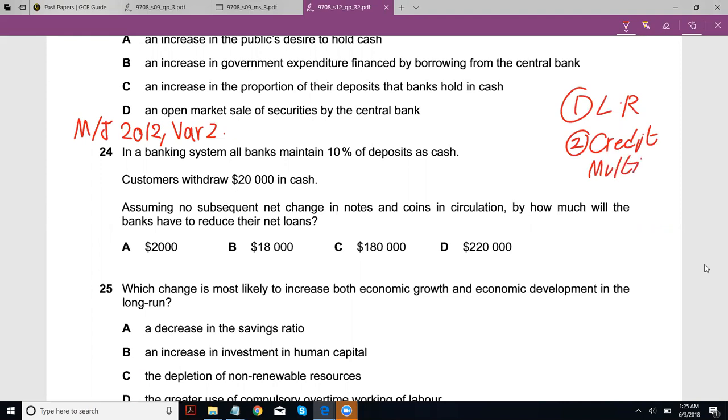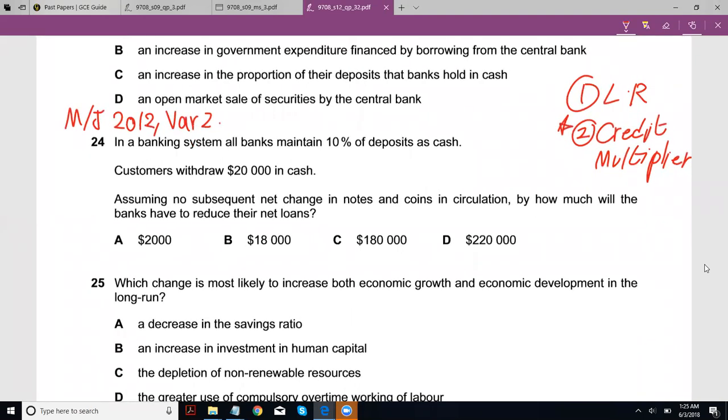And the second thing you need to look at is your credit multiplier. A lot of people forget to look at this, so maybe if you were getting this wrong, that's what you were overlooking.